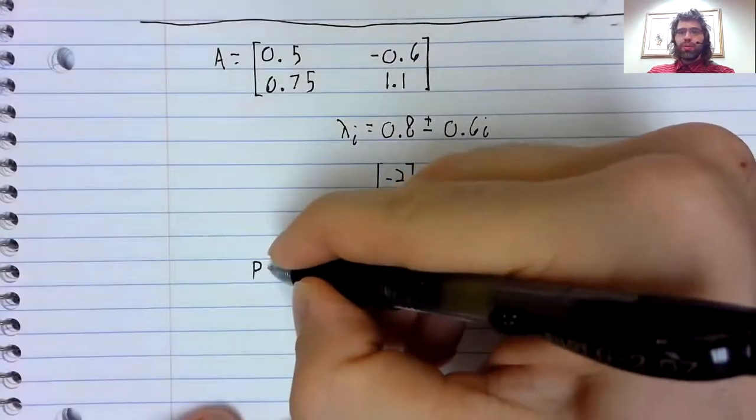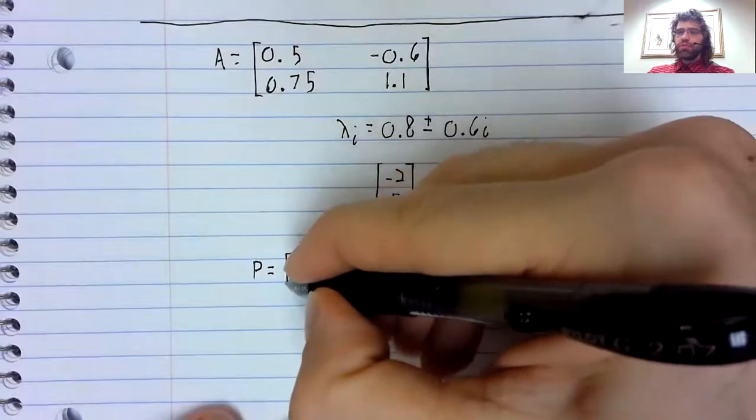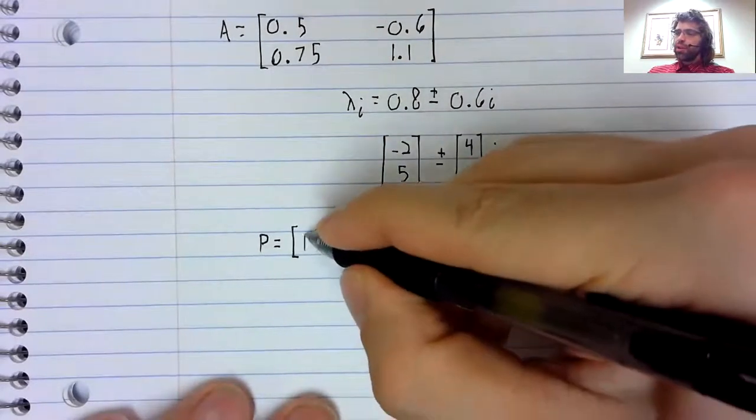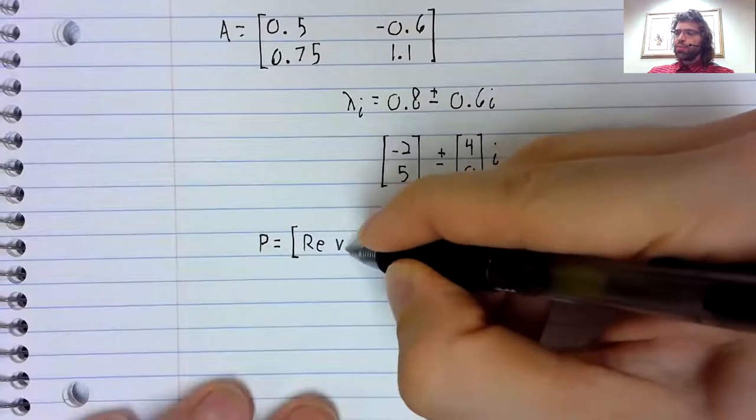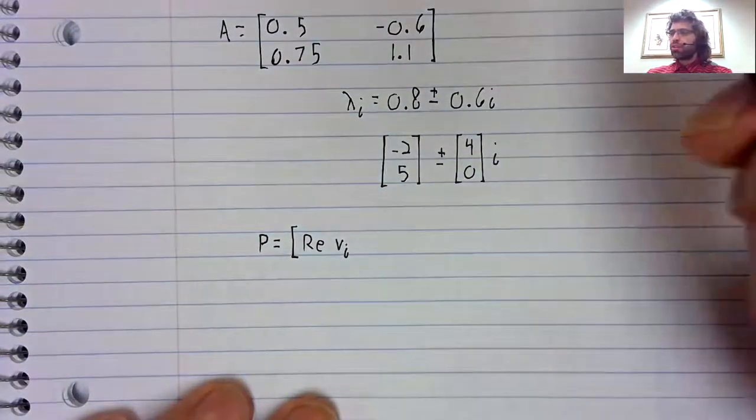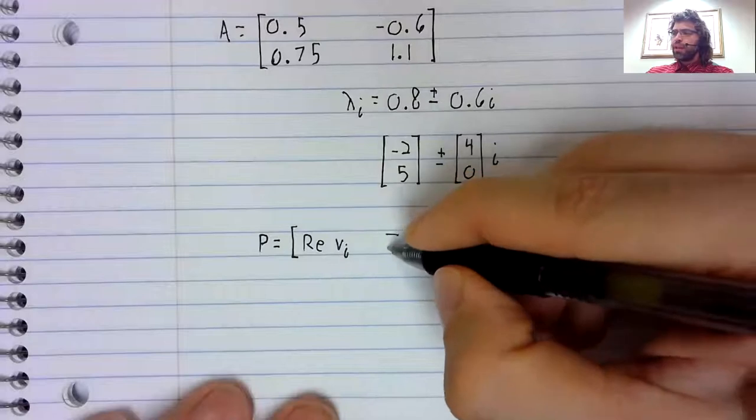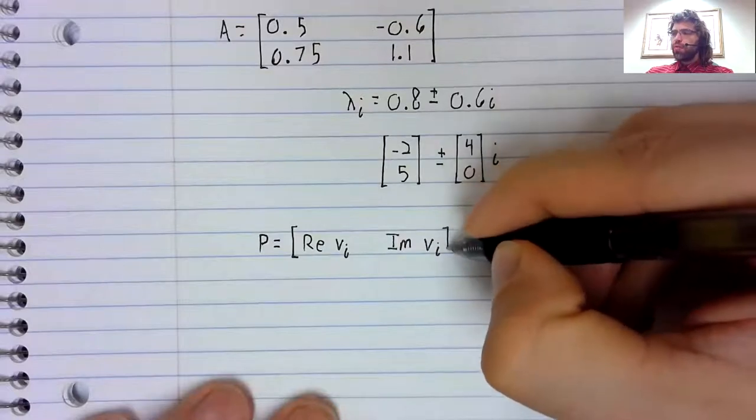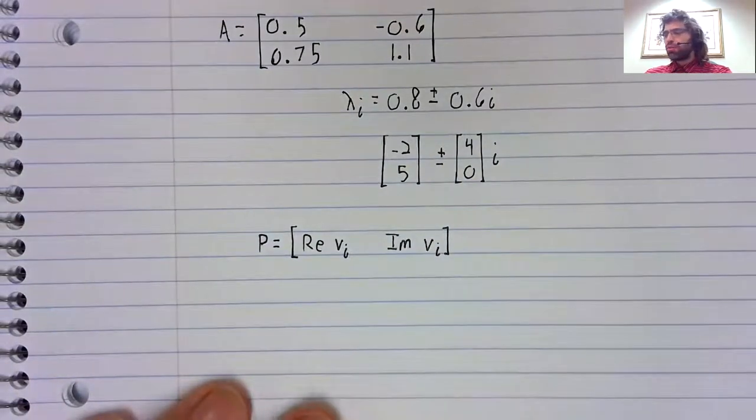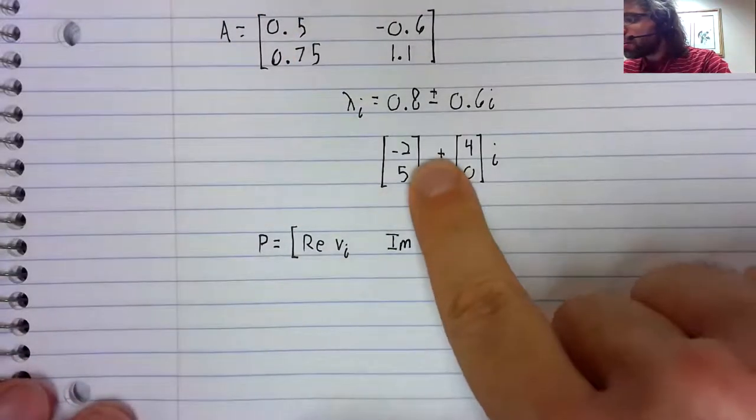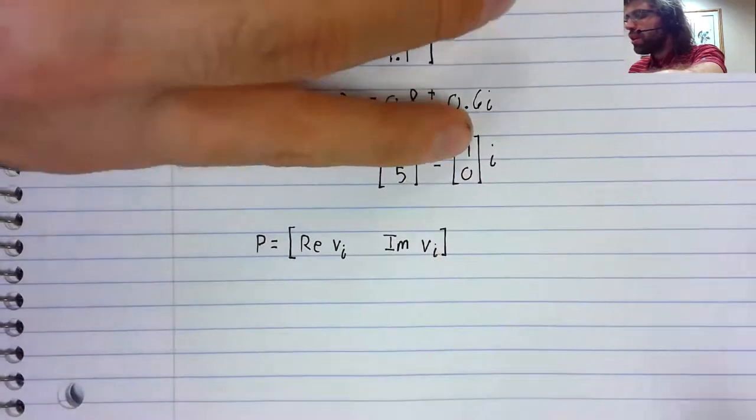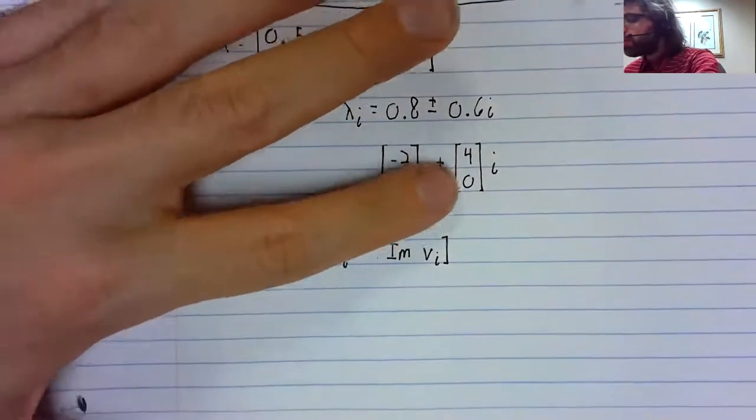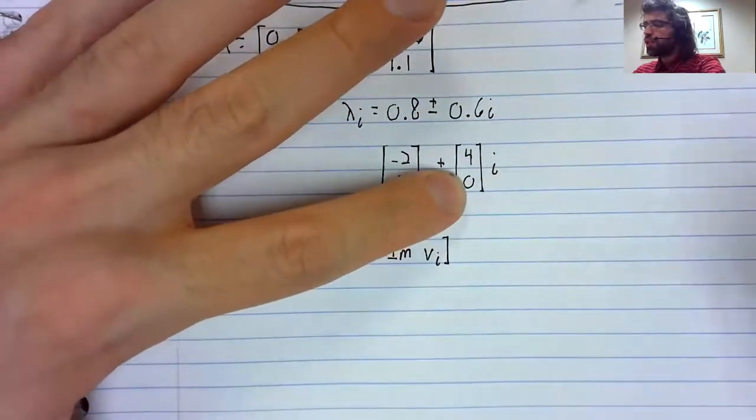First, we create a matrix that has as its columns the real part of one of these eigenvectors and the imaginary part of one of these eigenvectors. So you see, we have two eigenvectors, one from the plus, the other from the minus. We'll select one of them, it doesn't matter which, let's select the plus.